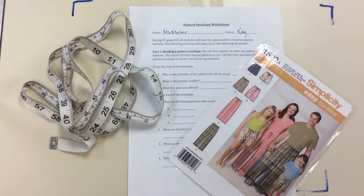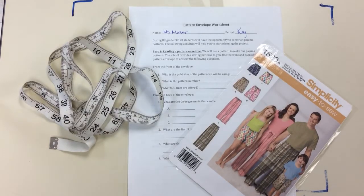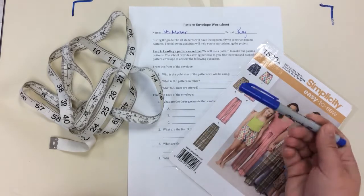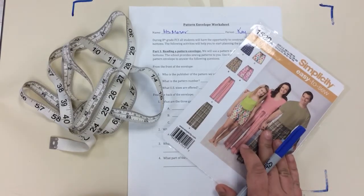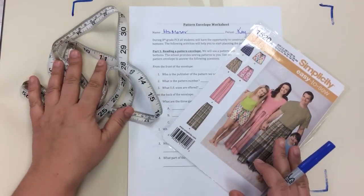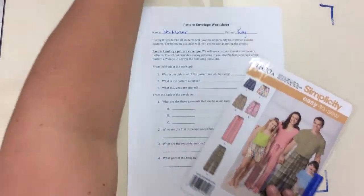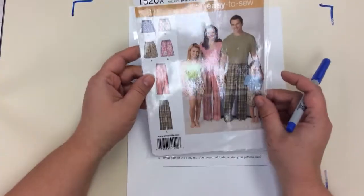Okay, hello everyone. In this video we're going to be going over the pattern envelope worksheet and reading the pattern envelope in preparation for our pajama pants. You're going to need the worksheet which should be in your packet, a writing utensil, a pattern envelope, and a measuring tape for when we are finished the worksheet.